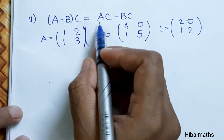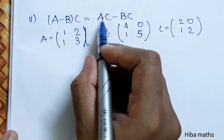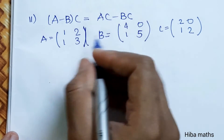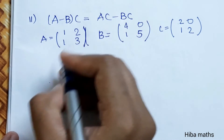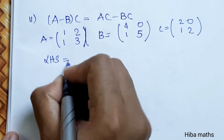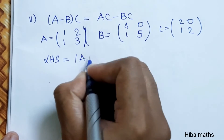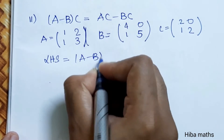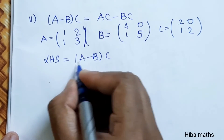The second sub-question: show that (A - B) into C is equal to AC minus BC. We will compute LHS first, which is (A - B) into C.